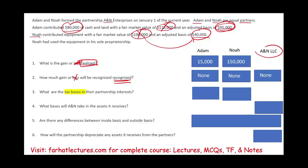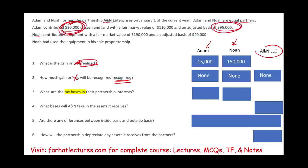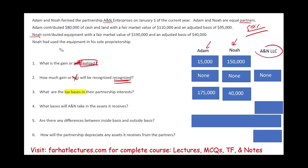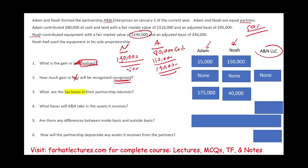What are the tax bases in their partnership interests? The tax basis equals the adjusted basis of the property contributed. For Adam: cash of $80,000 plus adjusted basis of land of $95,000, for a total outside basis of $175,000. For Noah: equipment with an adjusted basis of $40,000, giving an outside basis of $40,000. Adam and Noah are equal partners — 50% each — meaning they contributed equal fair market values: Noah contributed $190,000 FMV, Adam contributed $80,000 cash plus $110,000 land, also totaling $190,000. So yes, they are 50/50 from a capital interest standpoint.